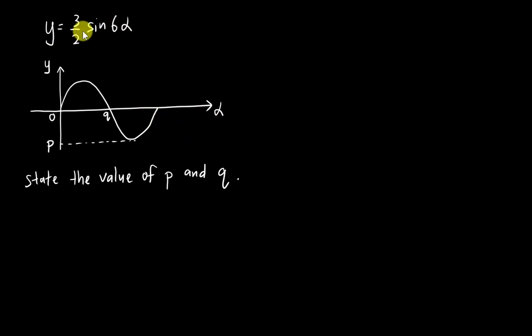You have an equation which is y equals 3 over 2 sine 6α. This is the y-axis and this is alpha. The question asks you to state the value of p and q. Basically, when you see the word 'state,' you know you can straight away write the answer without needing any working.